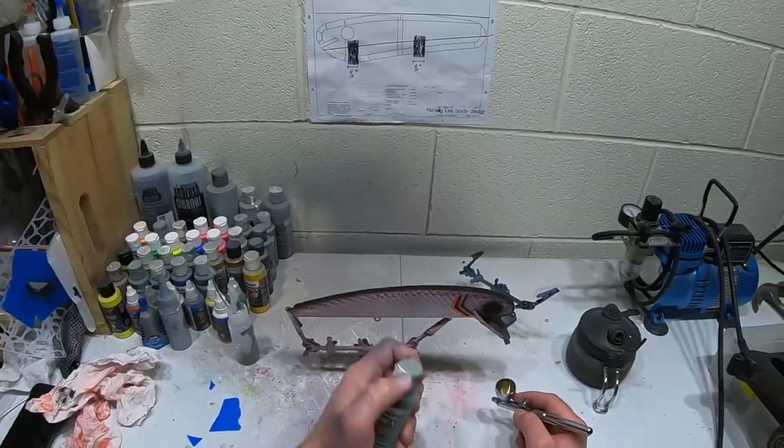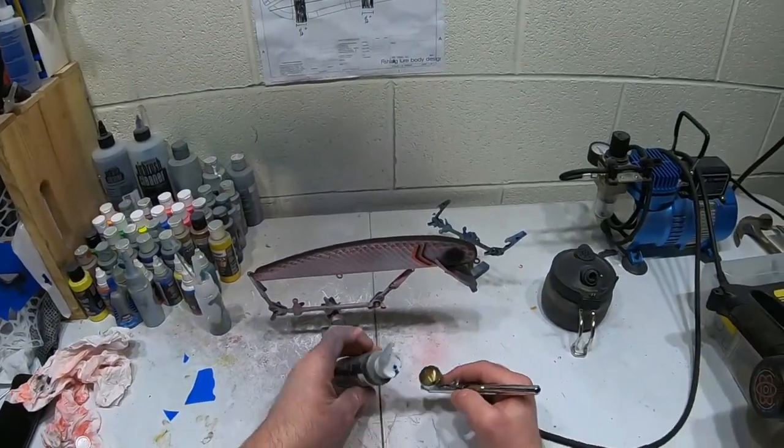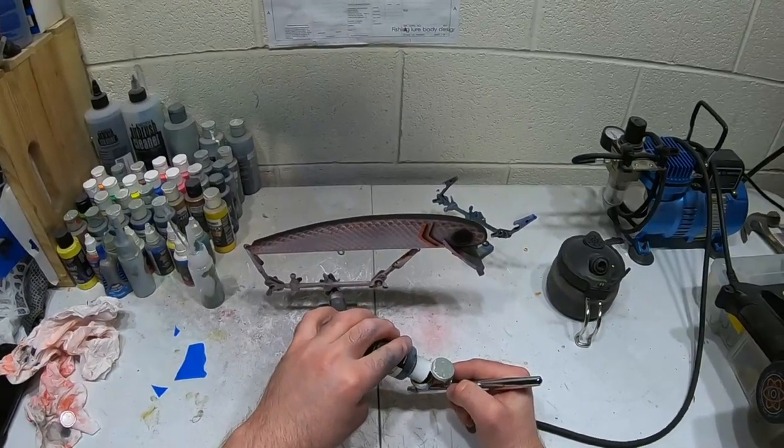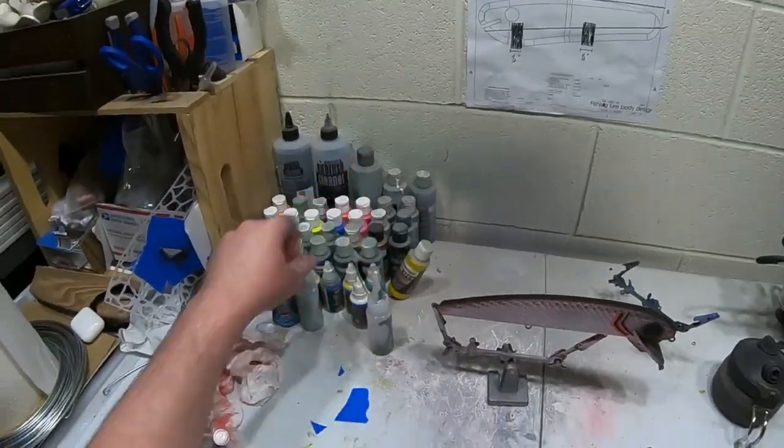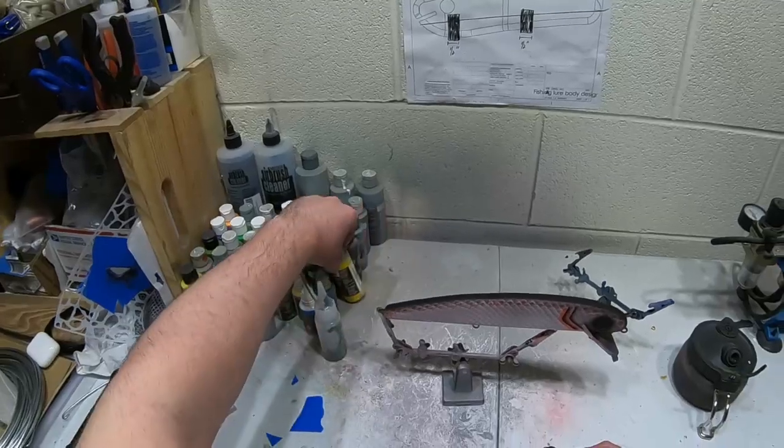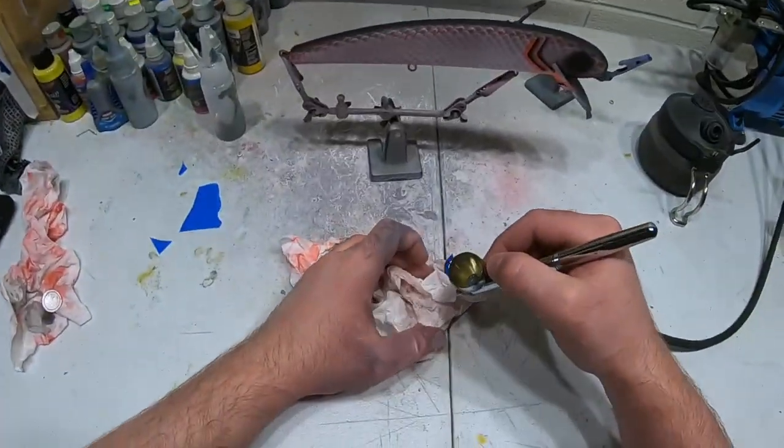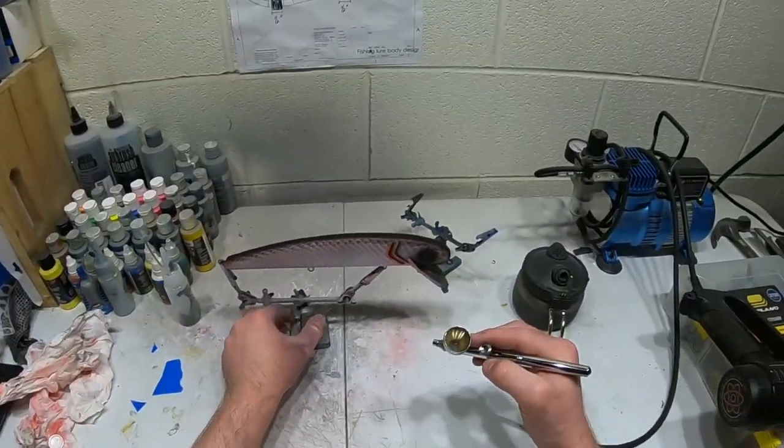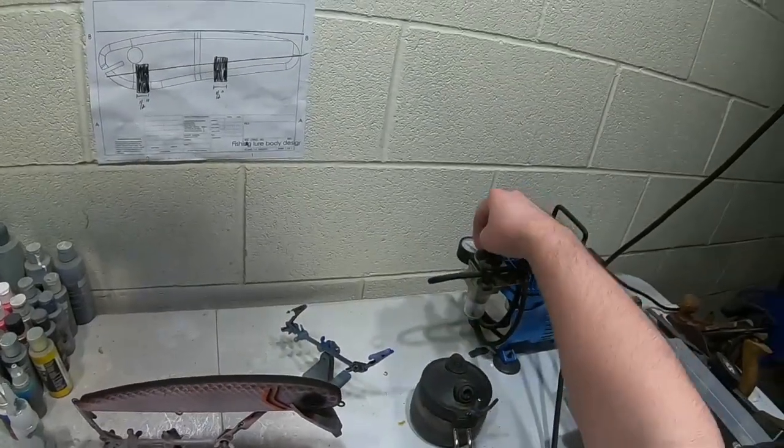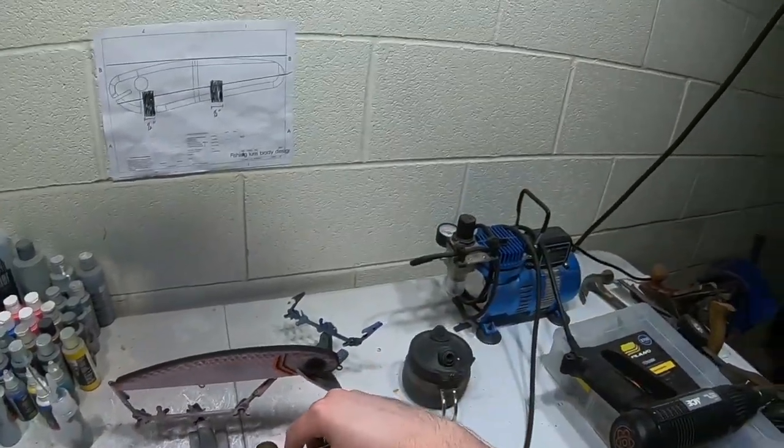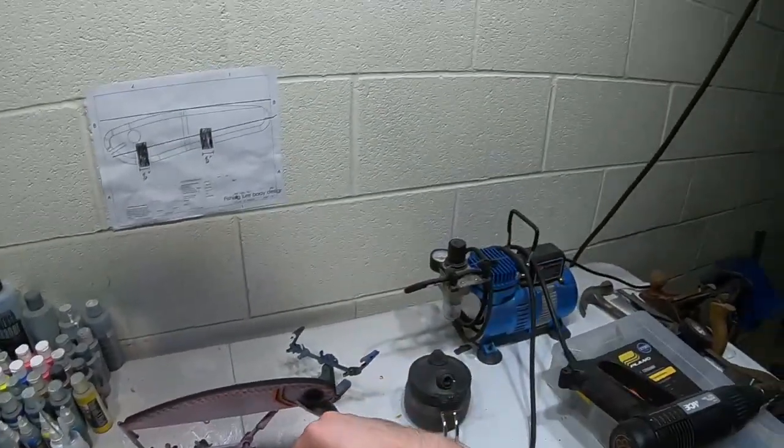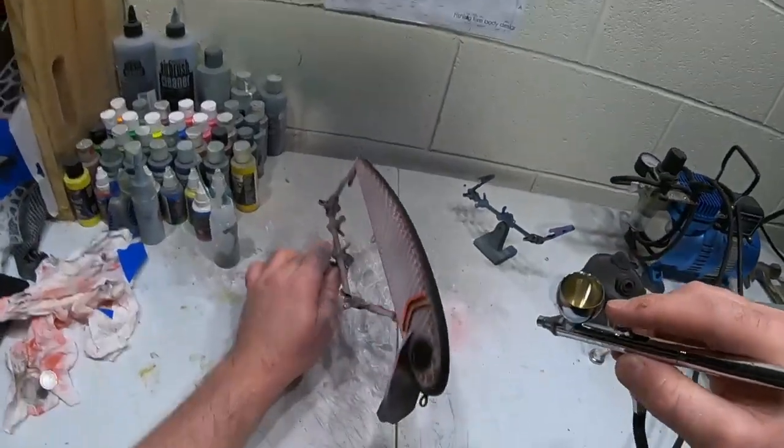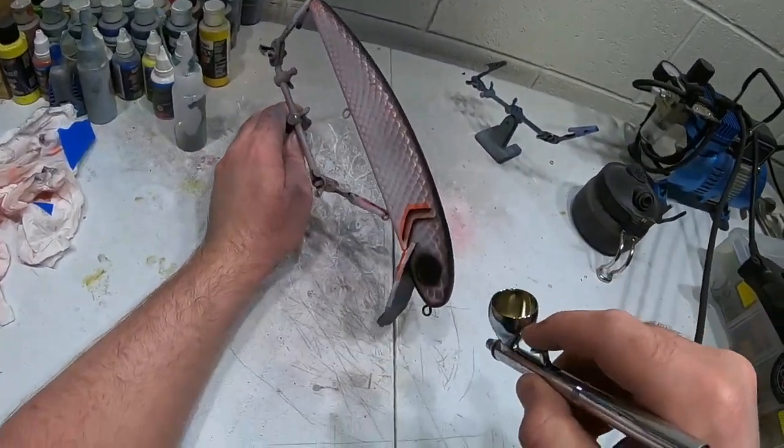So I got this medium gray that I'm going to go over it with, just a little bit. And lower that down just a little bit, pressure. Okay, and then we're just going to go over the back, kind of add an angle here to blend it together.